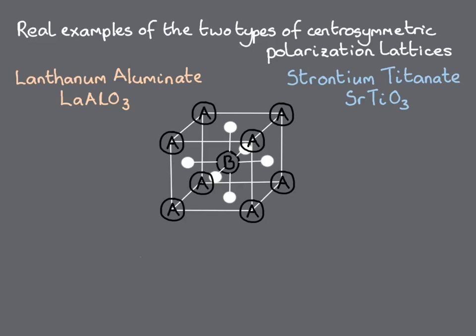There is an important difference, though, in that in lanthanum aluminate, both the A-site and B-site cations are trivalent, whereas in strontium titanate, the A-site cation is strontium 2+, and the B-site is titanium 4+.